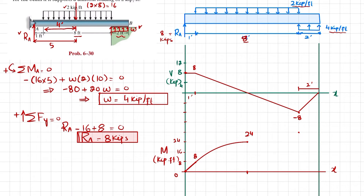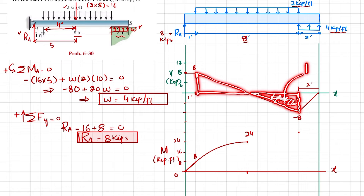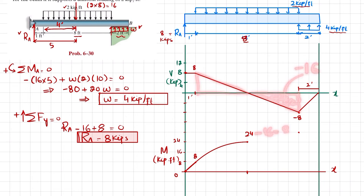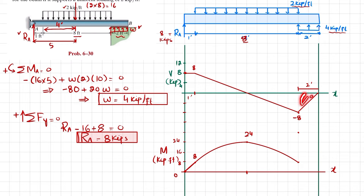The third area is similar to the second but negative: minus 16. So 24 minus 16 brings the moment back to 8 kip-feet, with the slope decreasing. For the last area, the shear is minus 8 over 2 feet, giving area of minus 8 times 2 divided by 2 equals minus 8. So 8 minus 8 brings the moment to 0.